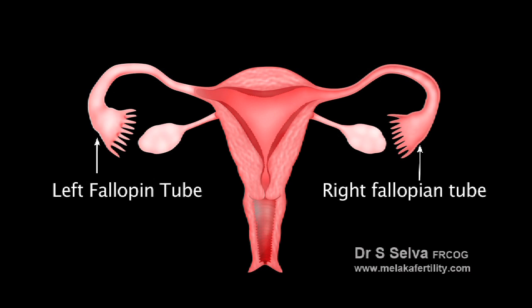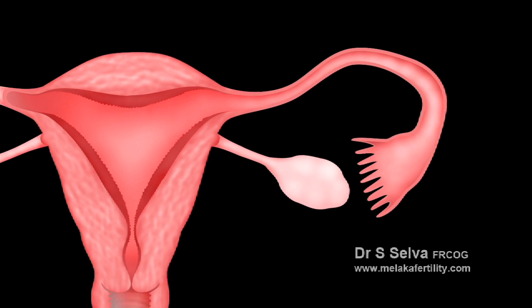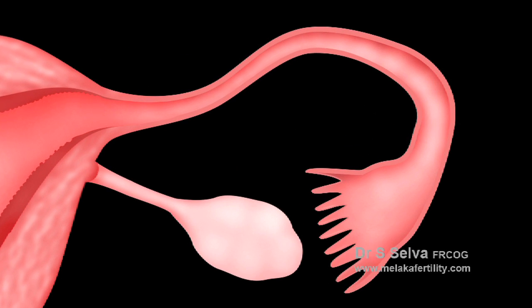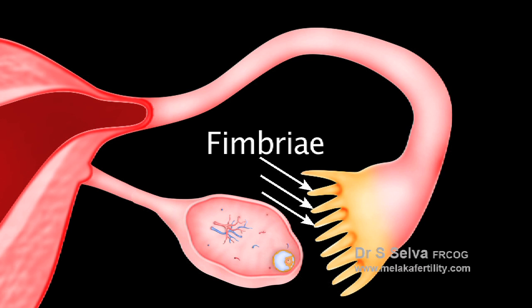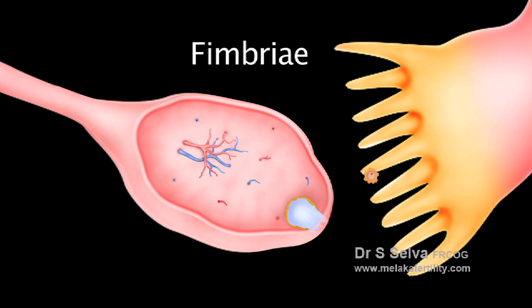The fallopian tubes, sometimes simply called tubes, are the two channels that connect the ovaries to the uterus. They are the main structures that facilitate fertilization. Each tube is divided into five main portions. Fimbriae are the fringe-like structures located at the end of the tube that capture an egg released from the ovary and draw it into the tube.